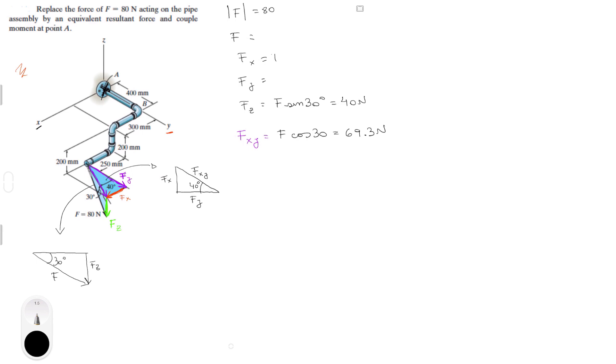F of X would be F of XY sine of 40, which is equal to 44.53 newtons. And F of XY cosine of 40 is F of Y, which is 53.09 newtons. And with that, we know that F is equal to 44.53 in the I plus 53.09 in the J minus 40 in the K. And now we got F.